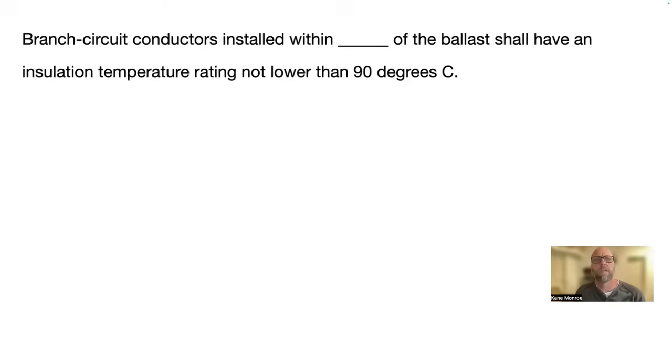All right. Branch circuit conductors installed within blank of the ballast shall have an insulation temperature not rated lower than 90 degrees Celsius. So they're looking for a distance. Three inches. And that's in 410.68. So not within three inches.